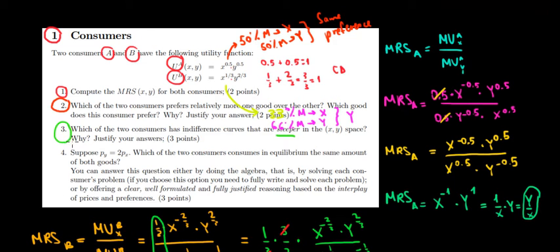Let's have a look at the last question, question 4. Suppose the price of Y equals 2 times the price of X. So good Y is twice as expensive as good X. Which of the two consumers consumes in equilibrium the same amount of both goods of X and Y? Now we can answer it by algebra or basically by reasoning. And I suggest we do it with reasoning,